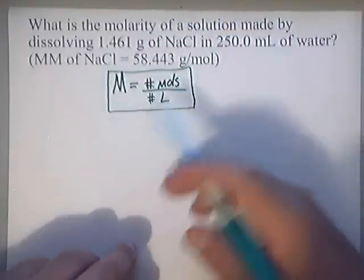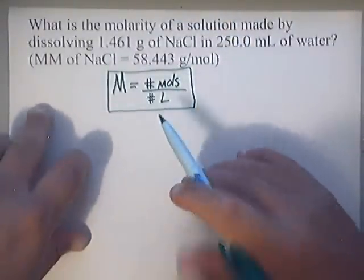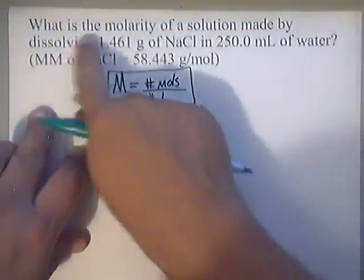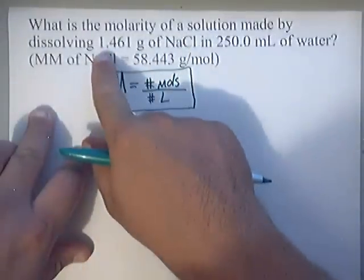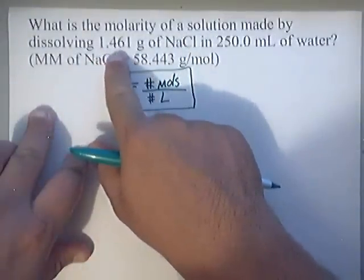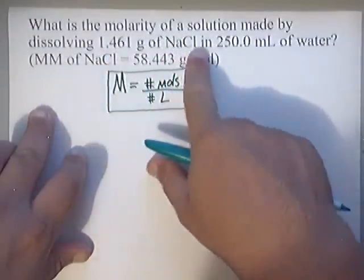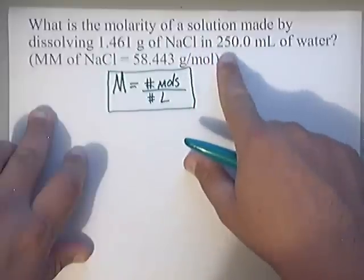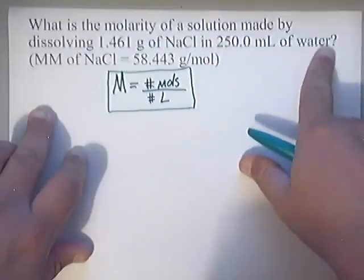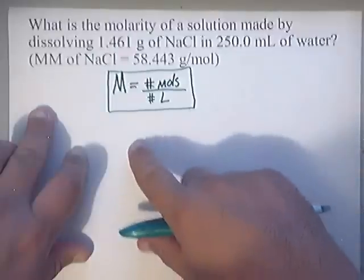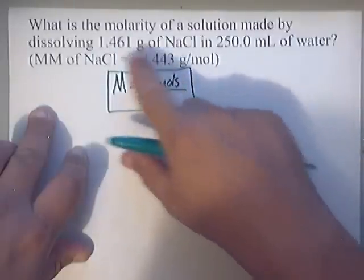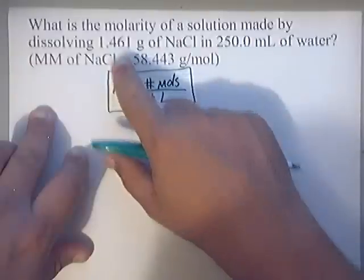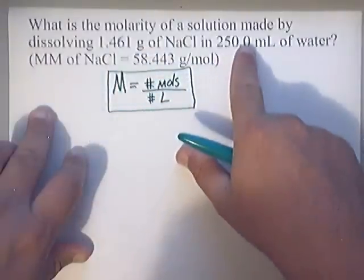So let's get started. The question says: What is the Molarity of a solution made by dissolving 1.461 grams of sodium chloride in 250 milliliters of water? We've got some problems here because we need moles — they gave us grams — and we need liters, but they gave us milliliters.